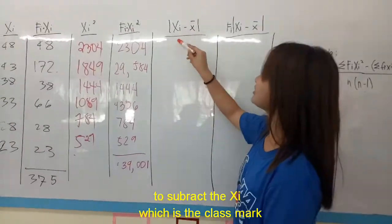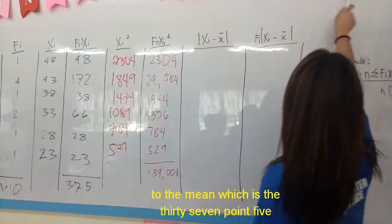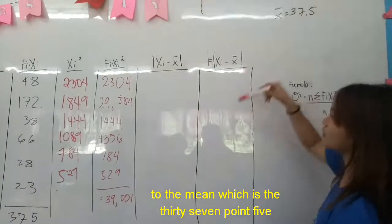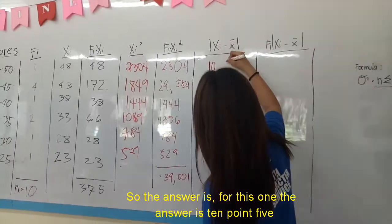Now we are going to draw the Xi which is the class mark minus the mean, which is 37.5. So the answer for this one is 10.5, and the next is 5.5.